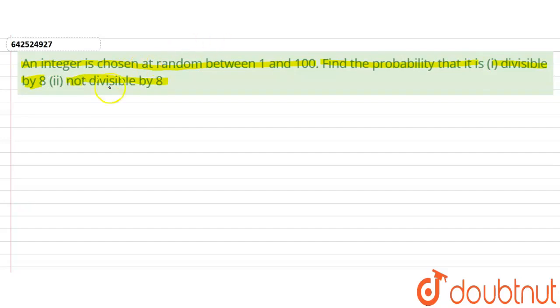So for that, let's first find the total number of outcomes of this experiment. Total number of outcomes equals—an integer is selected between 1 and 100.